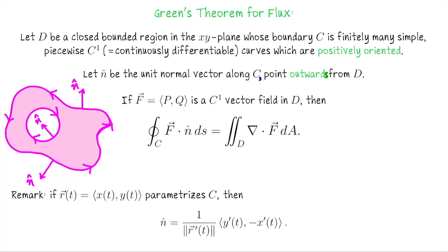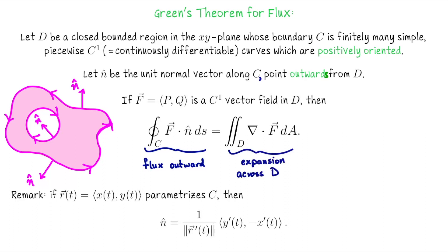If F is a vector field on ℝ² which is continuously differentiable, then the flux integral ∮ F·n ds is equal to the double integral of the divergence of F across the domain D. The integral on the left measures the flux outward across the boundary of D, and we're saying that equals the total expansion across D. If we have positive flux out, we expect expansion; if we have flux inward, we expect contraction.